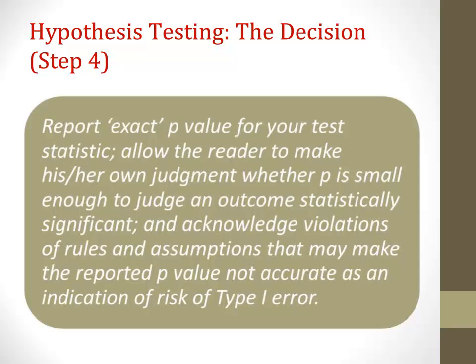These limits are discussed in detail by texts such as Warner. In many research situations, the exact p-values reported by SPSS are probably not accurate estimates of the actual risk of type 1 error. Because of violations of rules and assumptions, the actual risk of type 1 error is often higher than the reported p-values. The p-value estimates the risk of type 1 error less accurately in multivariate studies reporting large numbers of analyses compared to those using univariate statistics.